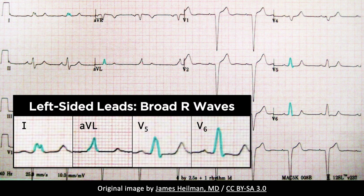The morphology of QRS complexes can also provide important clues. The QRS complexes in left-sided leads have a large positive deflection, which can be monophasic or have a notch. However, if Q waves are present in leads I, V5, and V6, then consider the possibility of myocardial ischemia or infarction.